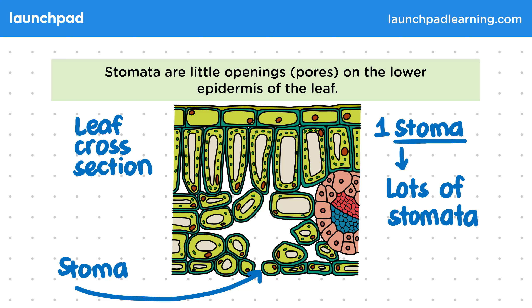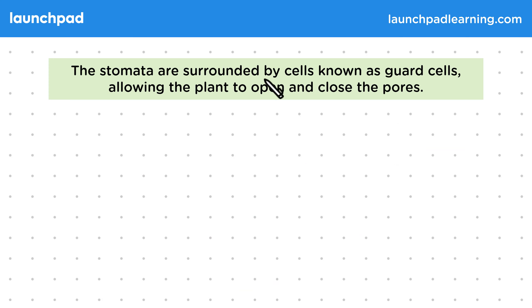we use the plural which is stomata. So remember: one stoma, lots of stomata. So what type of cells surround stomata? The stomata are surrounded by cells known as guard cells, allowing the plant to open and close the pores. You need to be aware of stomata and the guard cells that surround them.